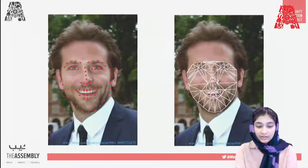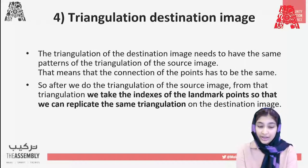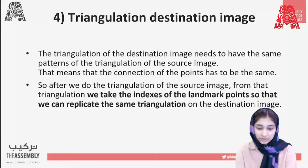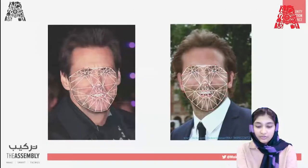This is how we track the facial landmark points and perform Delaunay triangulation. We'll do the same triangulation for the destination image — the triangulation of the destination image needs to have the same patterns as the source image, meaning the connections of points have to be the same. After doing the triangulation of the source image, we take the index of the landmarks so we can replicate the same triangulation on the destination image. Then we extract and warp the triangles.